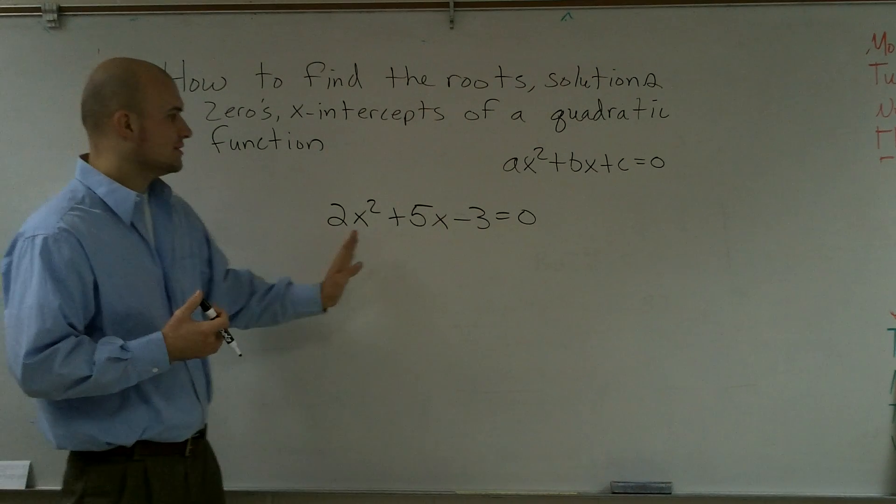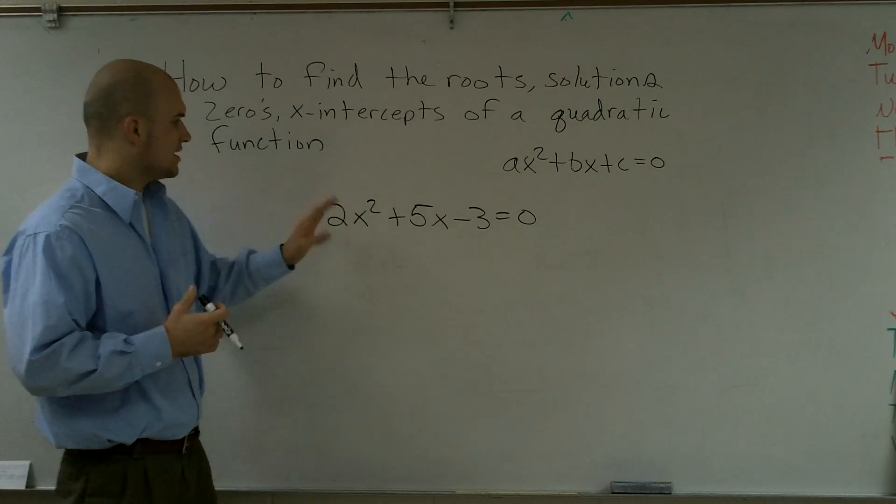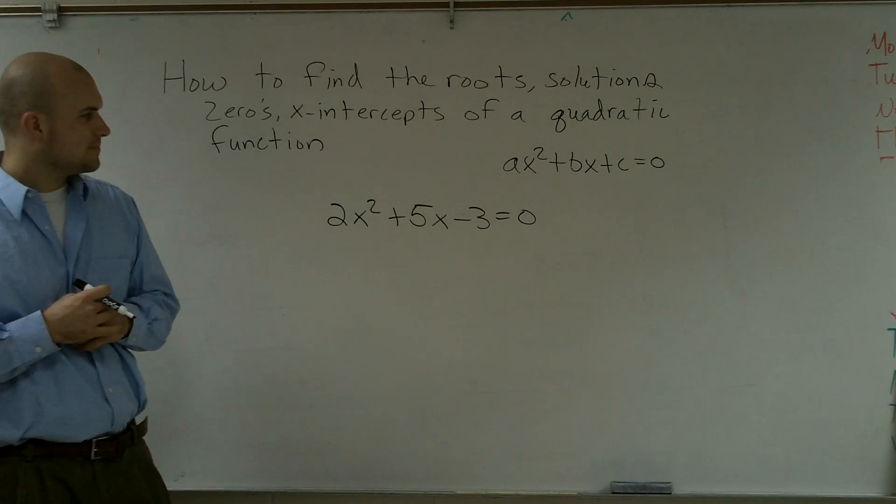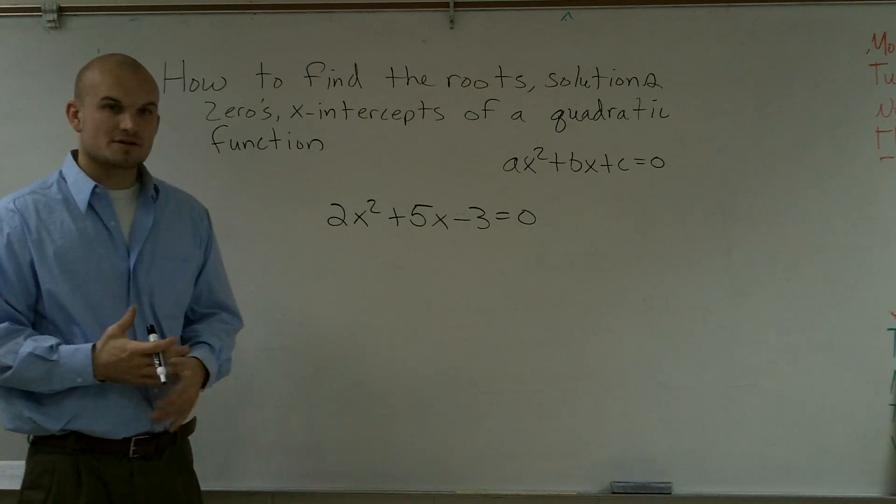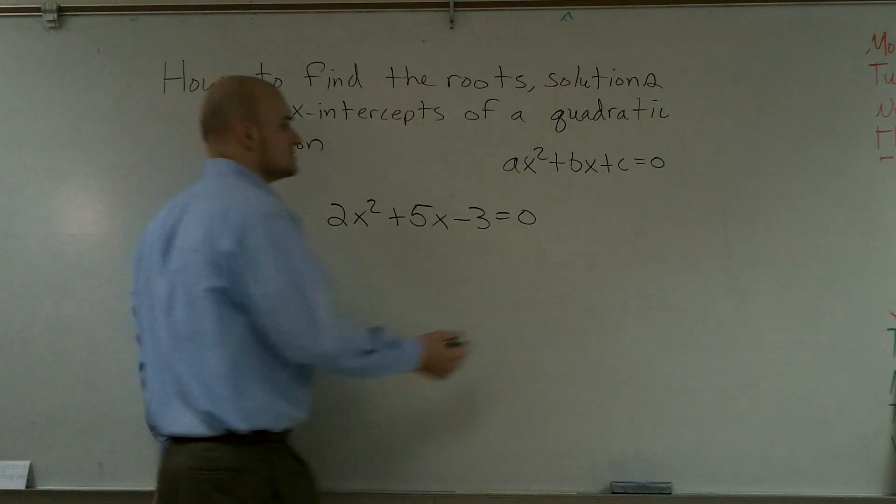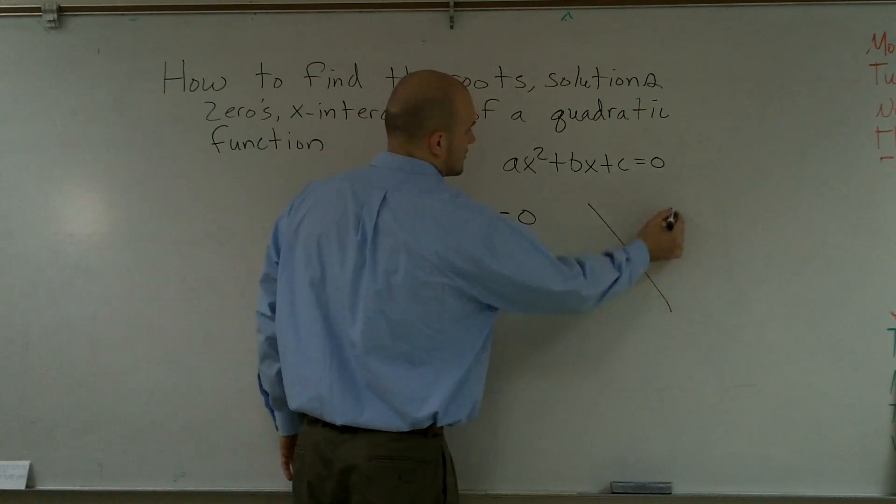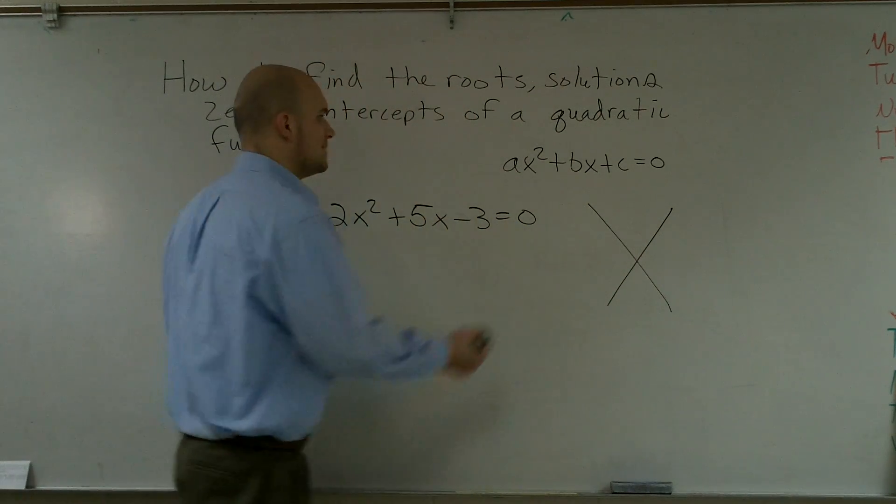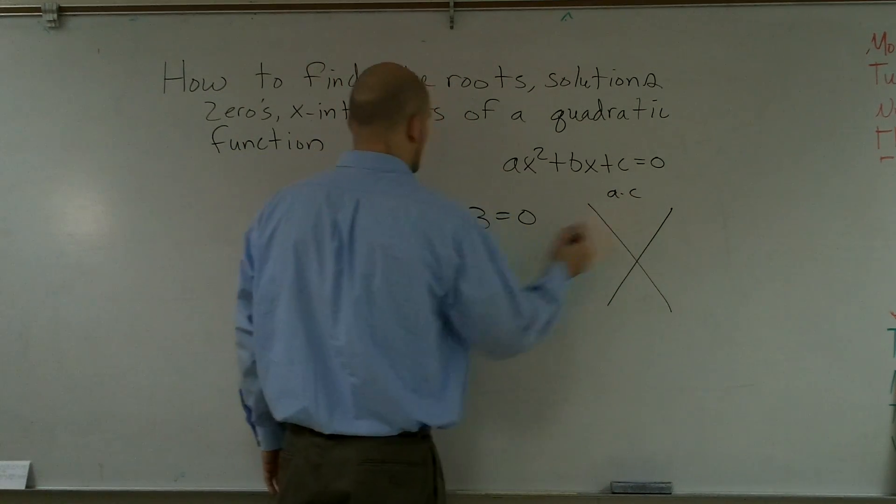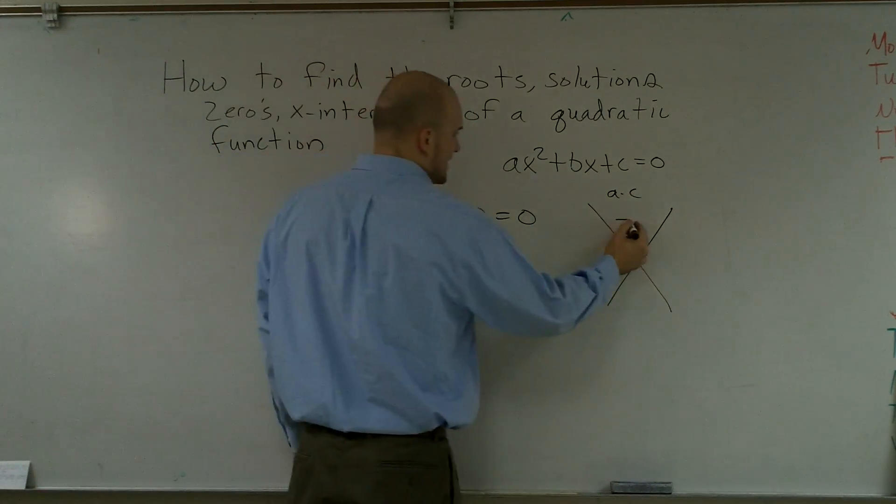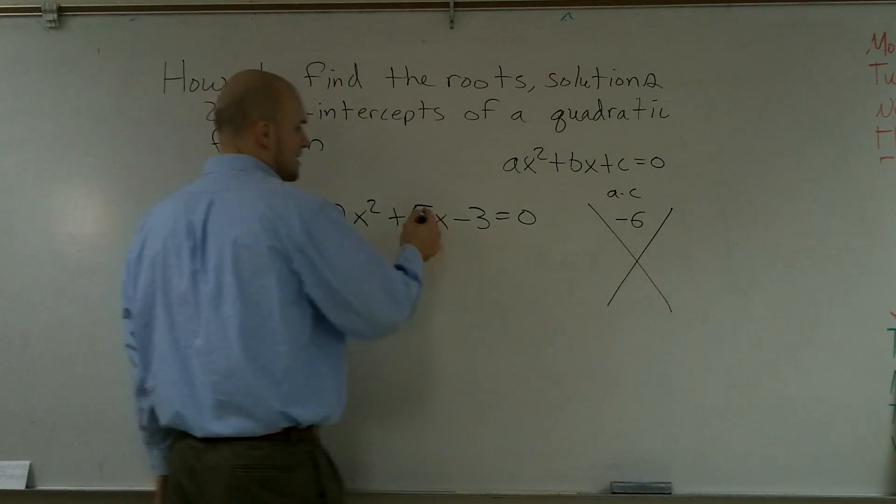So the next thing I look is there's no perfect square, or I don't want to complete the square. So before I use a quadratic formula, I want to see if I can still factor this. So I do my a times c, which is 2 times negative 3, which is negative 6, and my b which is 5.